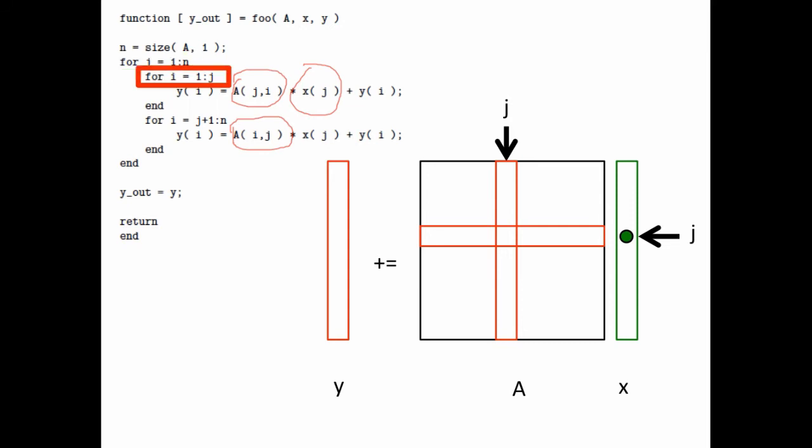And then when we execute this first i loop, we march through the vector y. We go to the appropriate element in A. We think of the element in A mirrored with respect to the diagonal. We multiply that times xj. And then we add that to the red dot in y right here. So this entire loop is now executed as animated right here.